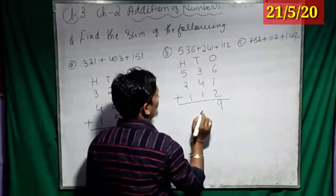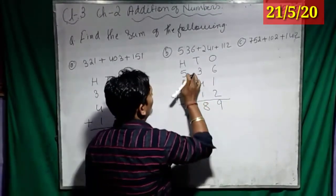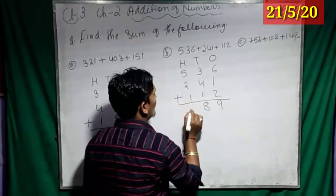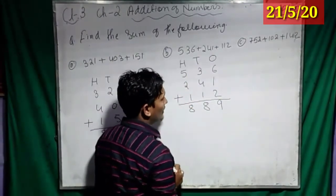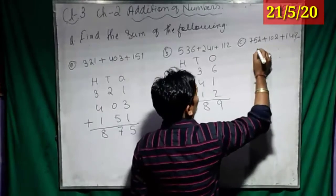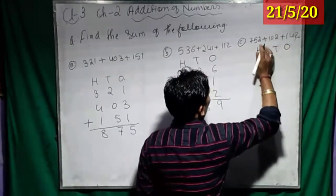Then, 3 plus 4 is 7. 7 plus 1? 8. Then, 5 plus 2 is 7. 7 plus 1? 8. Got it? Now, number C. First, yes, H-T-O.